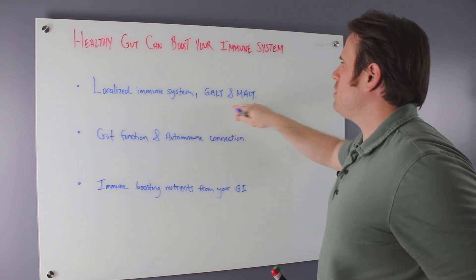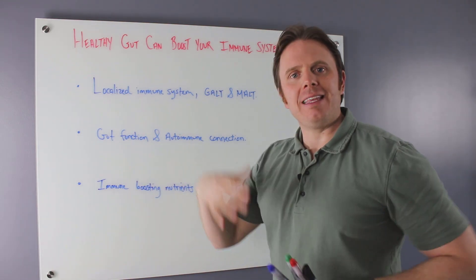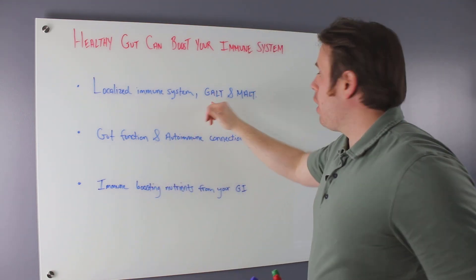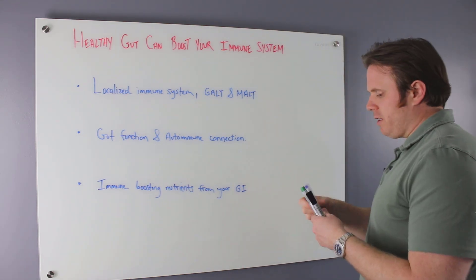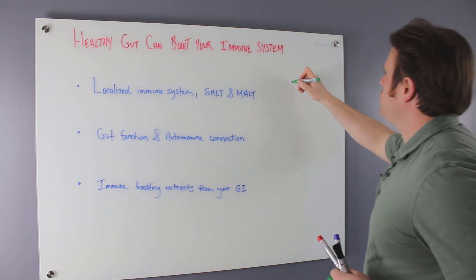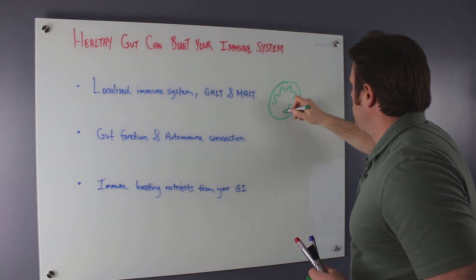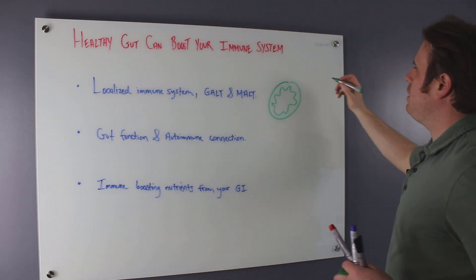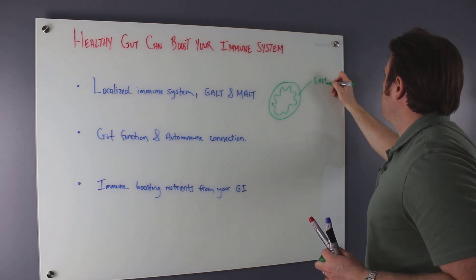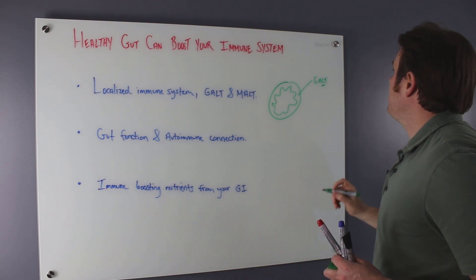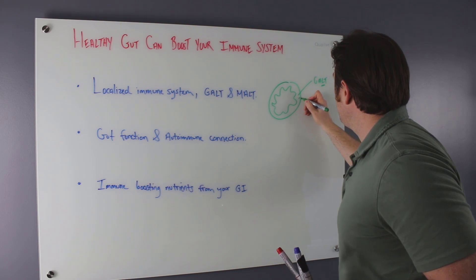You have a localized immune system called the GALT and the MALT. So this is lymphoid tissue that lines the GALT, which is the stomach associated lymphoid tissue. So for instance, let's draw this out so it makes sense. If here's the inside of your stomach like this, this area right here, this would be the GALT right here. The GALT stands for gastric associated lymph, lymphocytes, which are white blood cell tissue. And these cells are actually going to live in here.